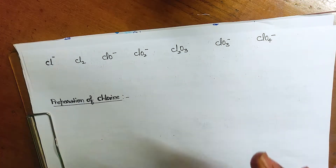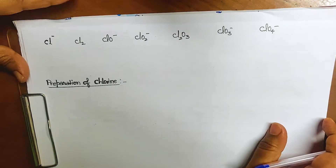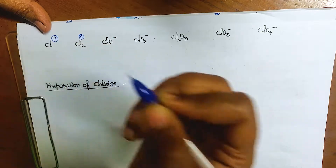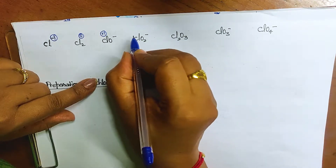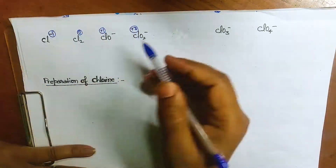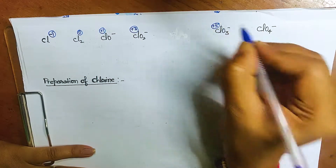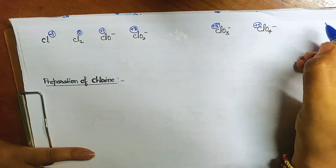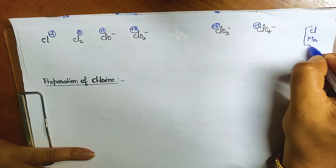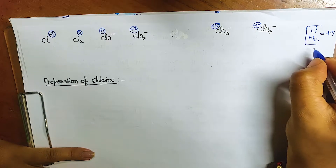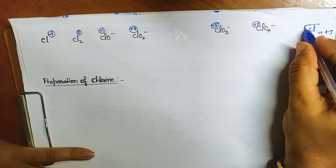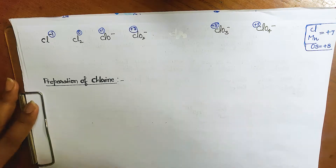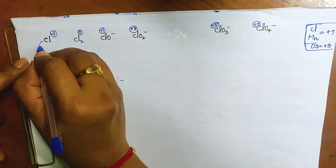Chlorine has a wide range of oxidation states. Cl⁻ is −1, Cl2 is 0, in HOCl it is +1, in ClO2⁻ it is +3, in ClO3⁻ it is +5, and in ClO4⁻ it is +7. Notably, chlorine and manganese are the only two elements that can show the +7 oxidation state. Osmium can show +8, but no other element can show more than +6.